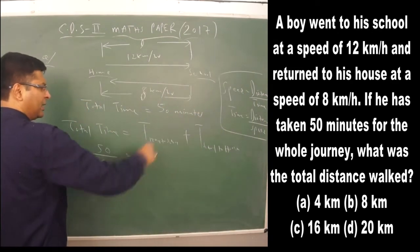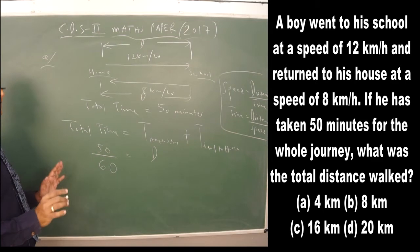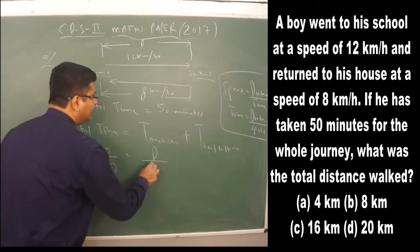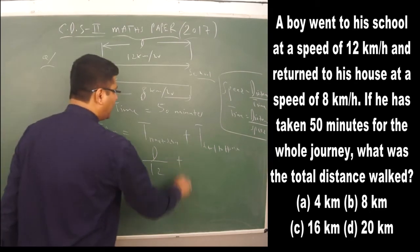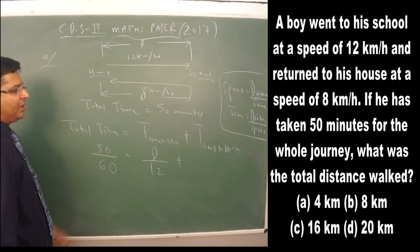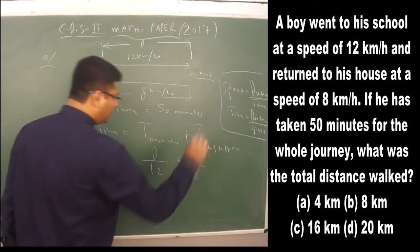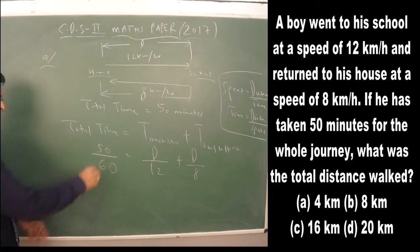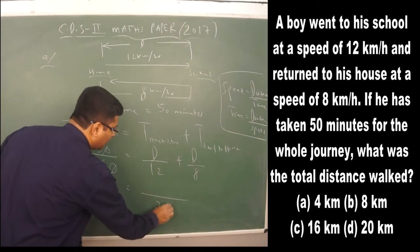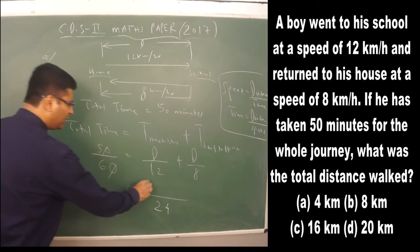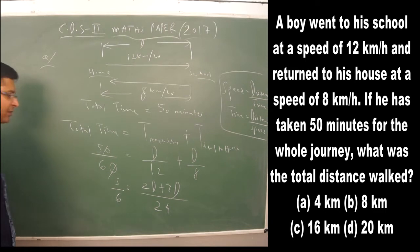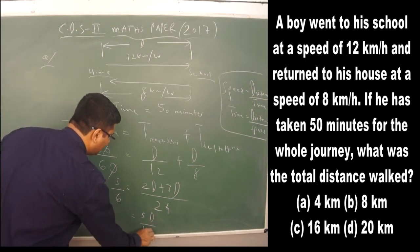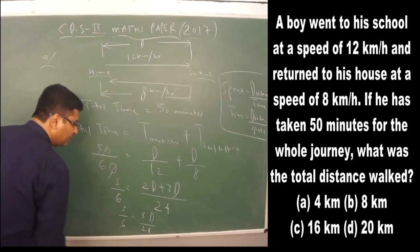Let the one-way distance be d. Going to school at 12 km/h gives time = d/12, and returning at 8 km/h gives time = d/8. Setting up the equation: d/12 + d/8 = 50/60. Taking LCM of 24, we get 2d + 3d = 5, so 5d/24 = 5/6.